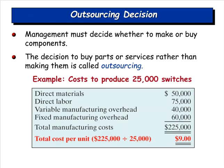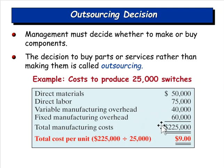The last decision type is outsourcing: should a company continue manufacturing a product or buy it from someone else? Here's an example — the cost to produce 25,000 switches: $50,000 in direct materials, $75,000 in direct labor, $40,000 in variable manufacturing overhead, and $60,000 in fixed manufacturing overhead, totaling $225,000, or $9 per switch.